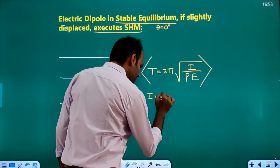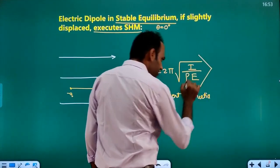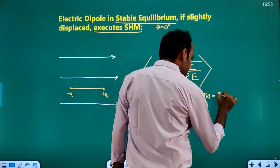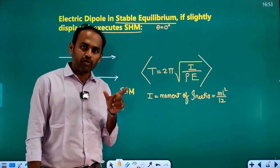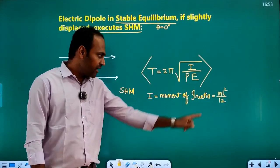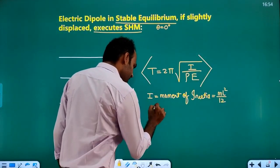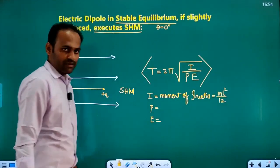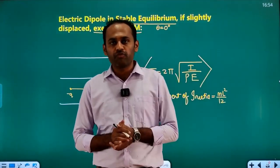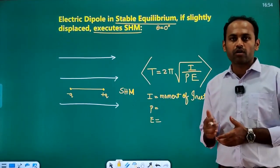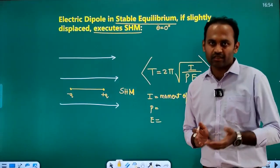Here, I is the moment of inertia. For a uniform linear body or rod, the moment of inertia formula is ml² divided by 12. Since the dipole is also a linear body, we use the same formula. So T = 2π√(I/PE) is the equation to calculate the time period of SHM of a dipole executing simple harmonic motion in a uniform electric field. That is all about torque acting on the dipole, work done in rotating the dipole, and potential energy of the dipole. We will see further concepts and MCQs in the next video. Thank you and keep watching.